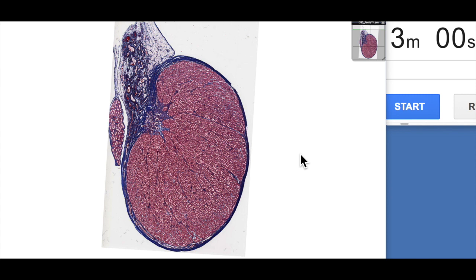G'day everyone, Jamie Chapman for another episode of 3 Minute Histology. Today we're moving on to the male reproductive system and we're going to start with the male gonad, which of course is the testis.